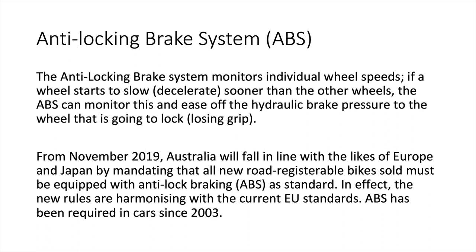To keep wheels rolling and minimise stopping distance, engineers developed anti-lock brake systems (ABS). ABS monitors individual wheel speeds; if a wheel decelerates faster than others, the system eases hydraulic brake pressure so the wheel doesn't lock and lose grip. From November 2019, Australia mandated ABS on all new road-registrable motorcycles, harmonising with EU standards already in place for cars since 2003.